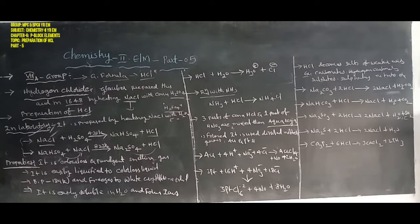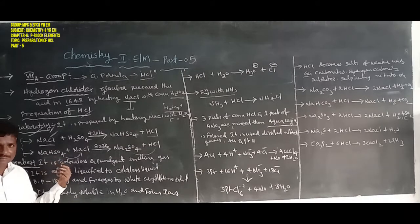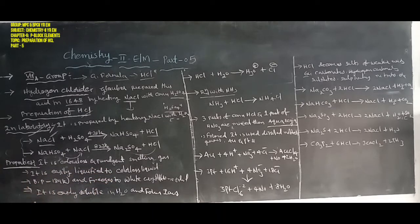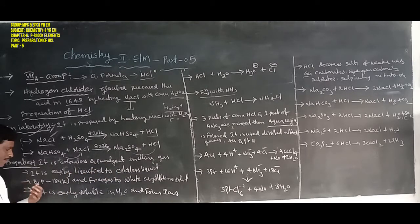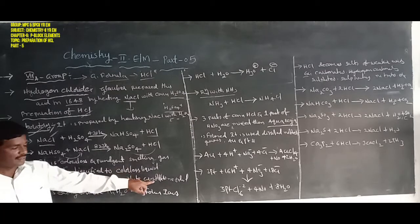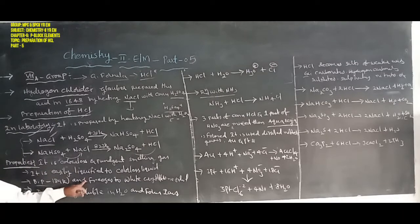Properties of hydrochloric acid: it is a colorless liquid with a pungent smelling gas, and is easily liquefied to a colorless liquid. Its boiling point exists at 189 Kelvin, and it freezes to form a white crystalline solid.